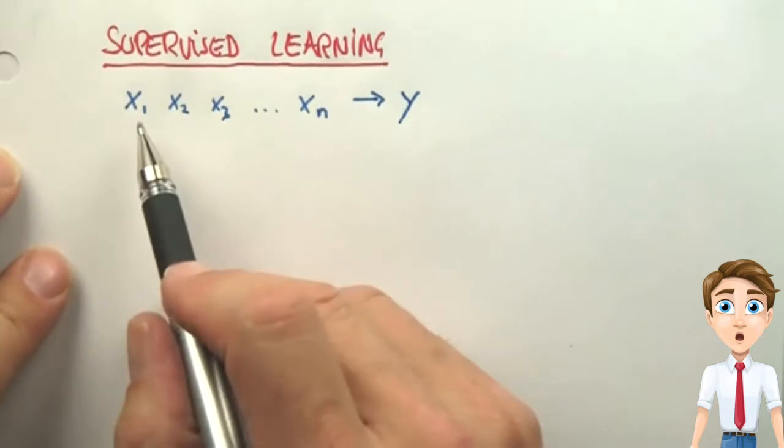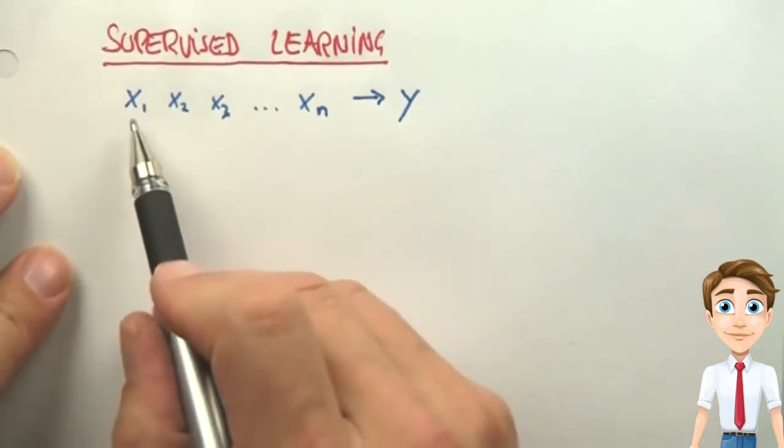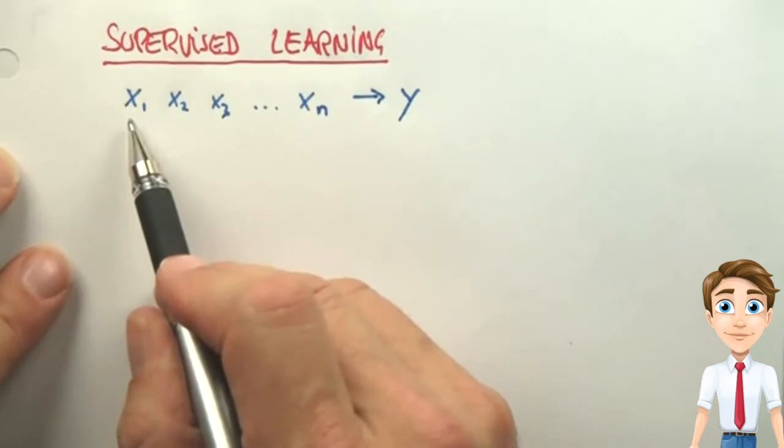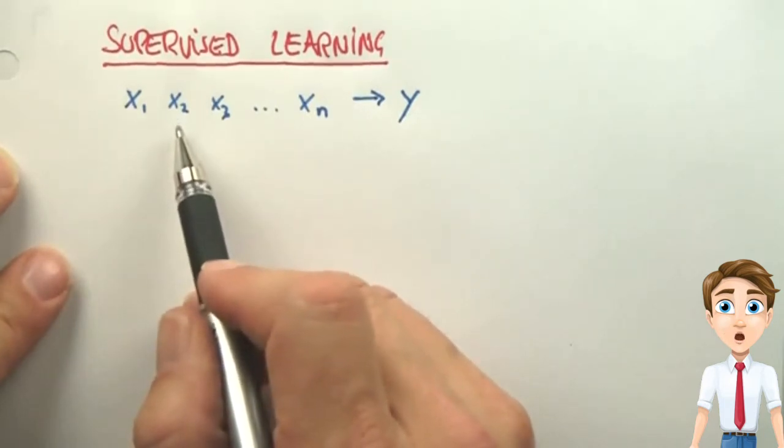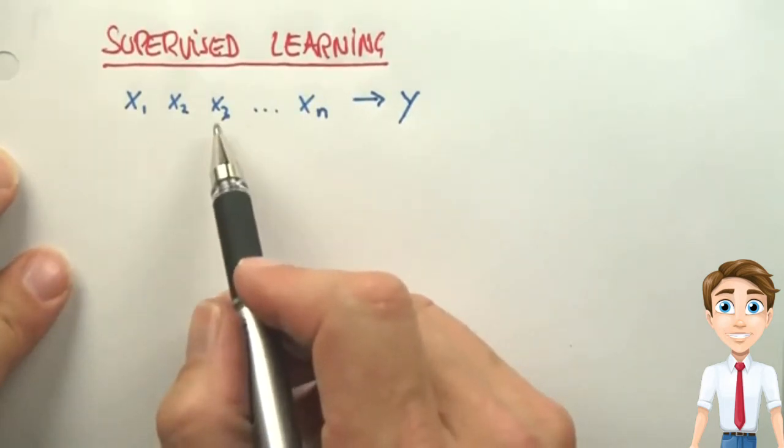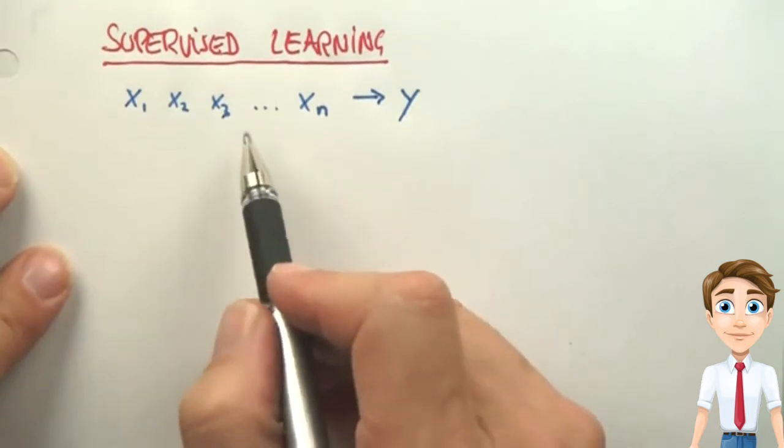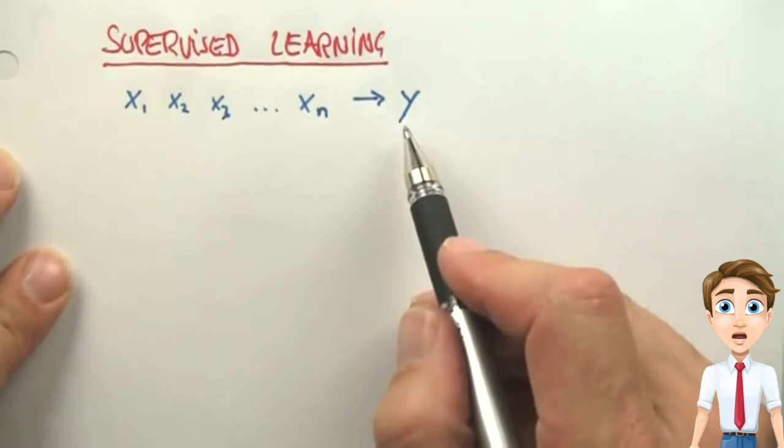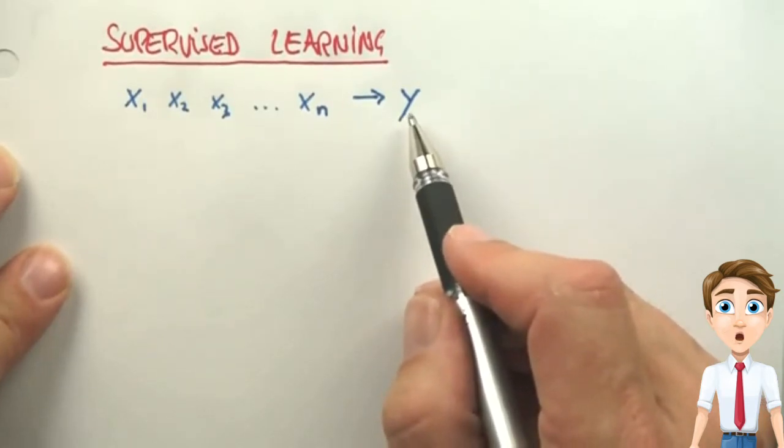For example, for a credit rating agency, X1, X2, X3 might be features such as: is the person employed? What is the salary of the person? Has the person previously defaulted on a credit card? And so on. And Y is the predictor whether the person is to default on the credit or not.